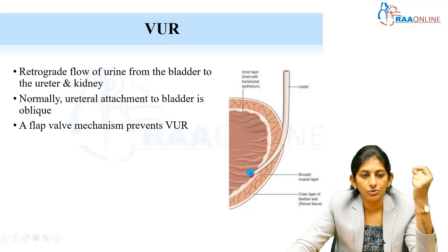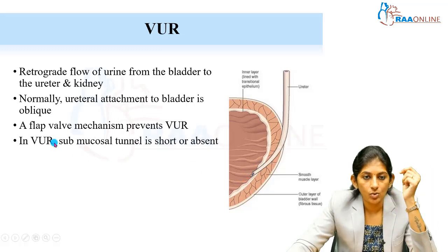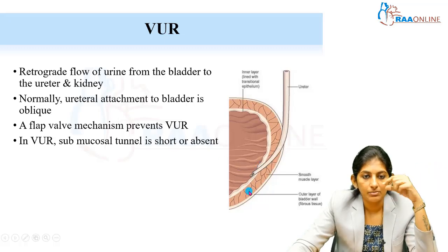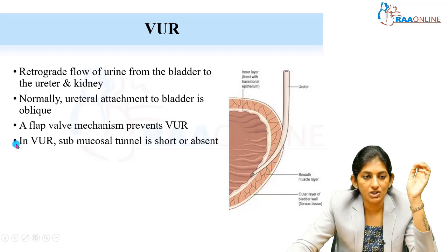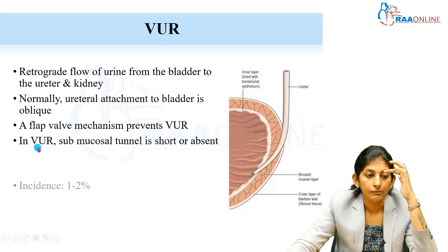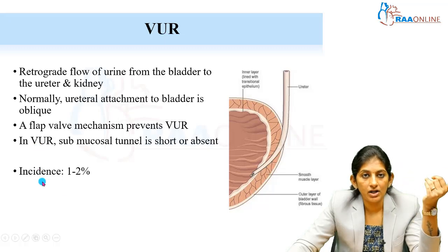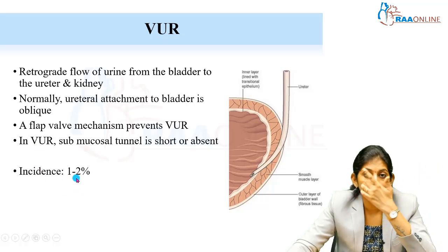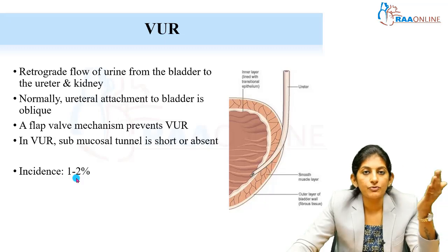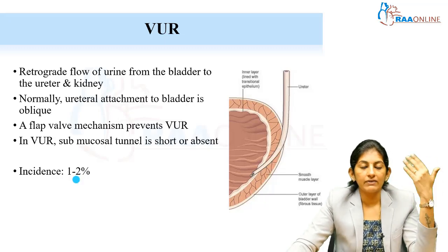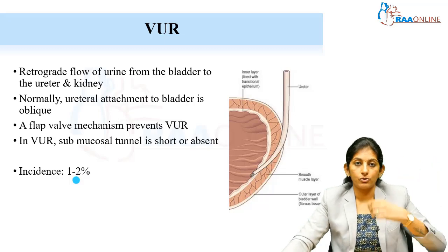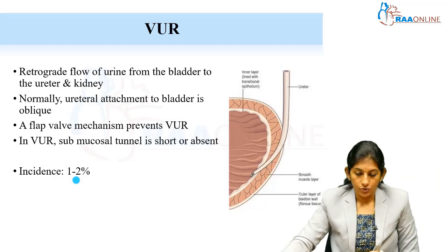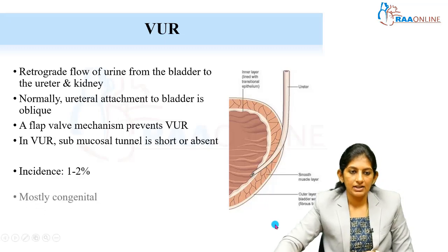The ureteral attachment is oblique and a flap-valve mechanism prevents retrograde flow. In VUR, however, the submucosal tunnel — after the ureter enters the muscle — is either short or completely absent. This causes retrograde flow. The incidence of VUR is one to two percent, which is quite high. We often discover it when evaluating a case of UTI or antenatal hydronephrosis.